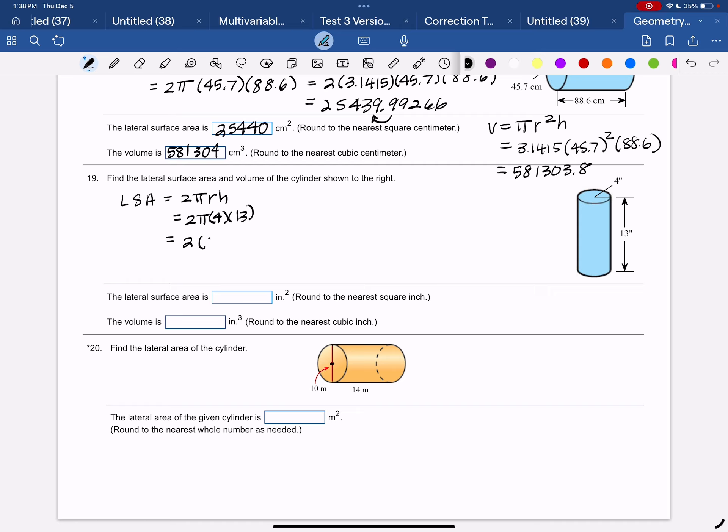So I'm going to put in the 3.1415 for my pi. And so that's going to give me 2 times 3.1415 times 4 times 13 is 326.716. So 326.716 to the nearest whole square inch is going to be 327 square inches.